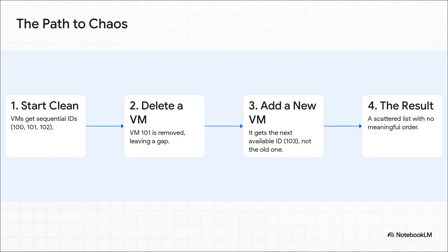And here's exactly how it all falls apart. You start out so clean — 100, 101, 102, everything's perfect. But then you do your job: you spin up a test VM, you tear down a container, and Proxmox doesn't backfill that number. It just keeps on counting, leaving this ugly gap behind. You do that a few dozen times, and pretty soon your list is just a random jumble of numbers that means absolutely nothing.